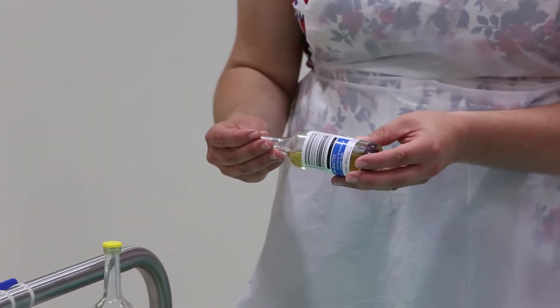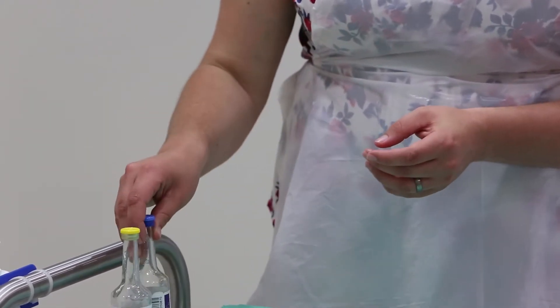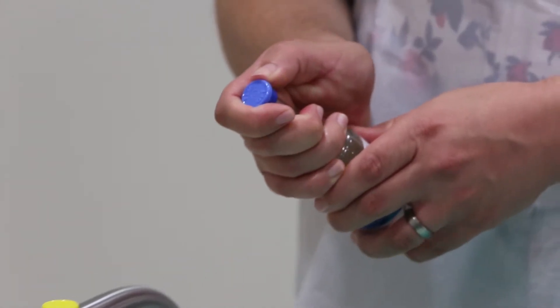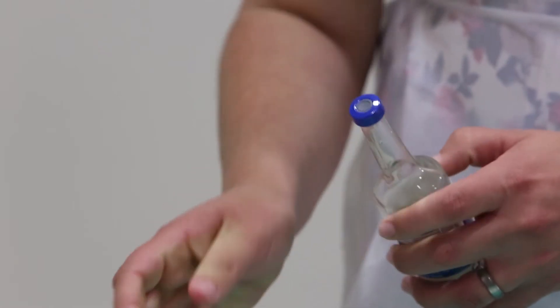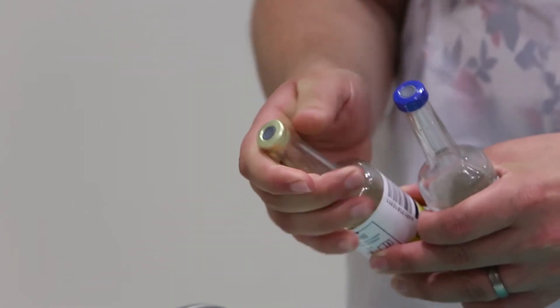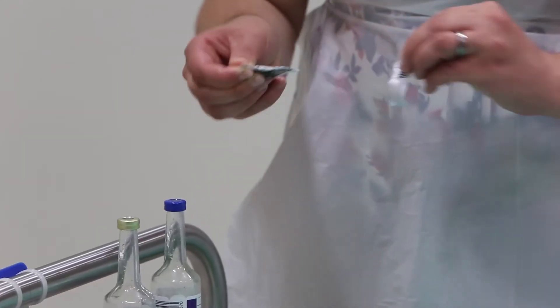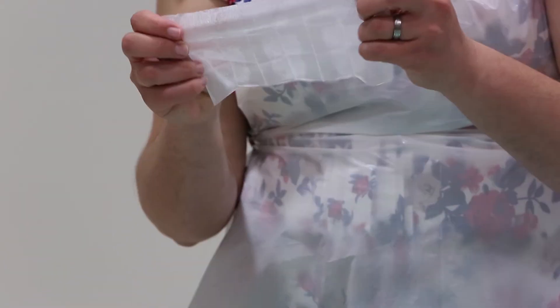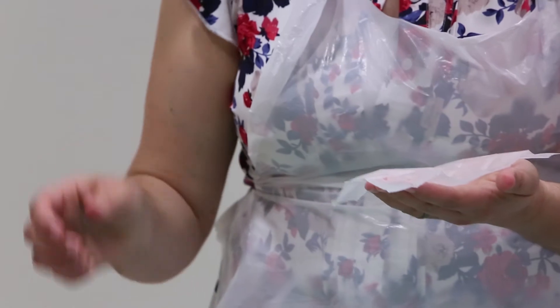Ensure the blood culture bottles are good for use by checking the bottle's expiry date. Remove the seal from the blood culture bottles in turn. Fully open the 2% chlorhexidine and alcohol wipe carefully as shown and lay it into the palm of one hand.